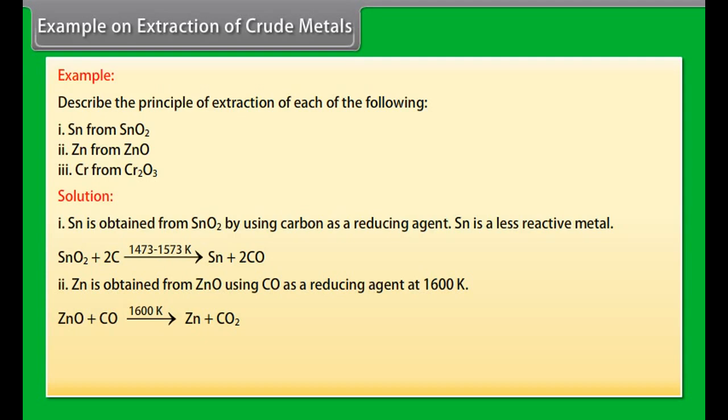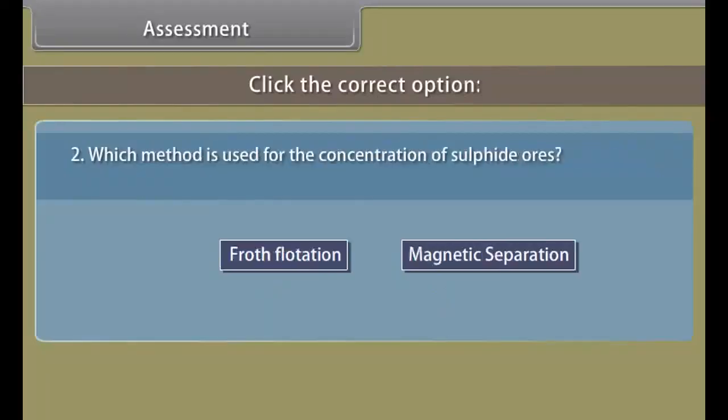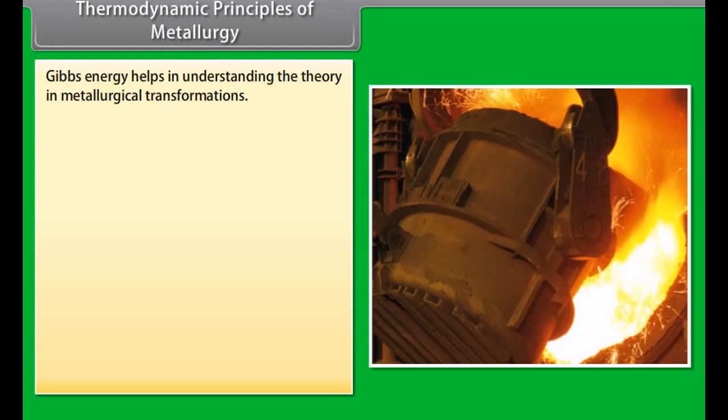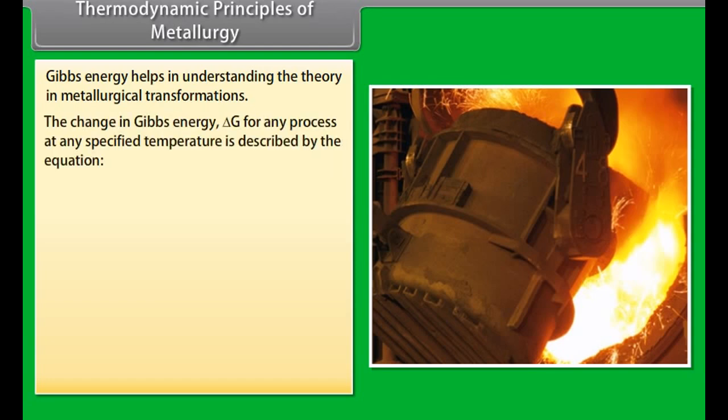Example on extraction of crude metals. Let's take an example on extraction of crude metals. Describe the principle of extraction of each of the following: Sn from SnO2, Zn from ZnO, Cr from Cr2O3.